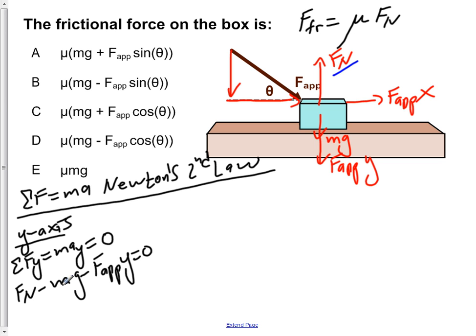Now, in order to solve for the normal force we add both mg and the y component of our applied force to the other side, giving us F_N is equal to mg plus the applied force and the y component of that.